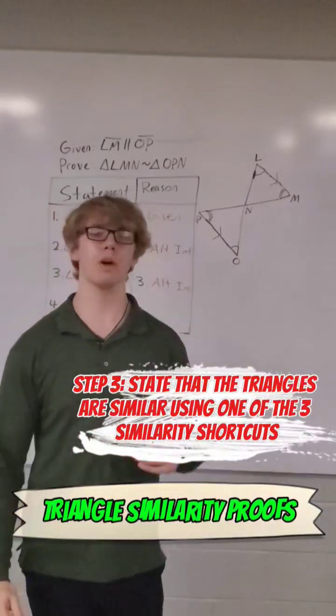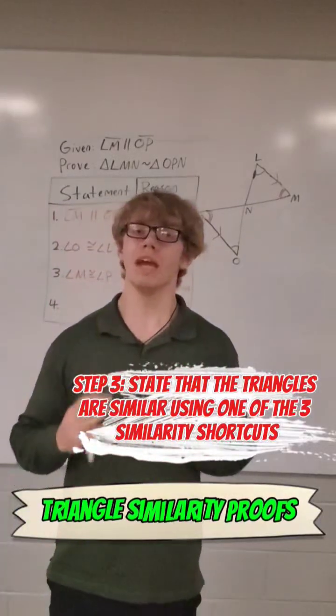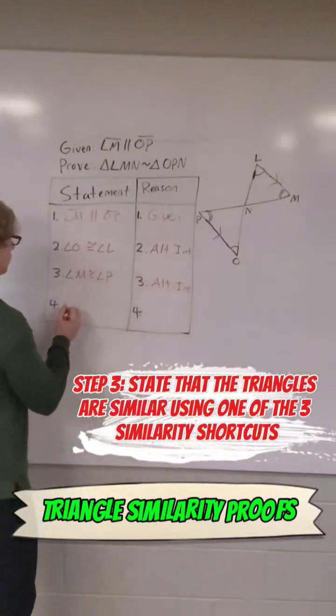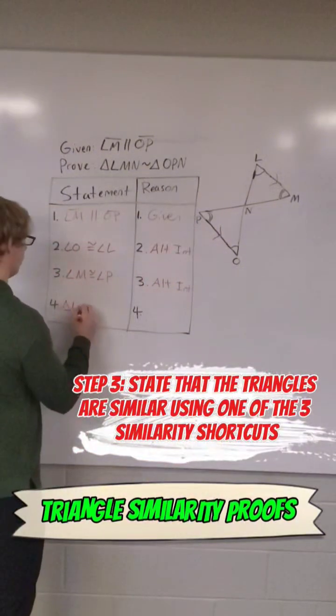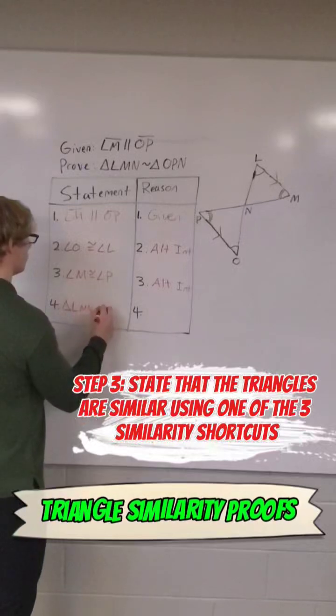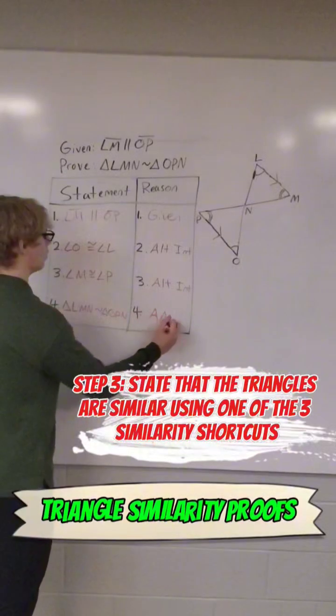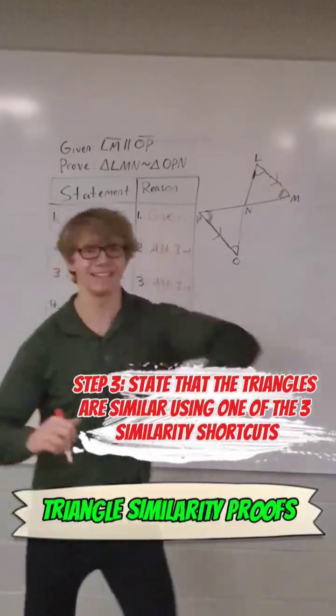Now we have two pairs of corresponding angles that we know are congruent. So now we can say that the triangles are similar, which means that they have the same shape and proportional size. So I'm going to write that triangle LMN is similar to triangle OPN using angle-angle similarity, and it was that easy.